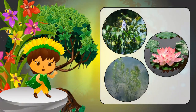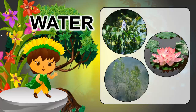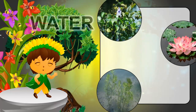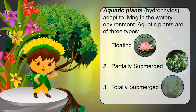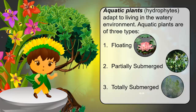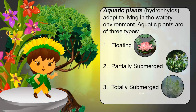What about these plants? Where can you find them? You got it right — in or on water! Aquatic plants, water plants, or hydrophytes adapt to living in a watery environment. Aquatic plants are of three types: floating, partially submerged, and totally submerged.